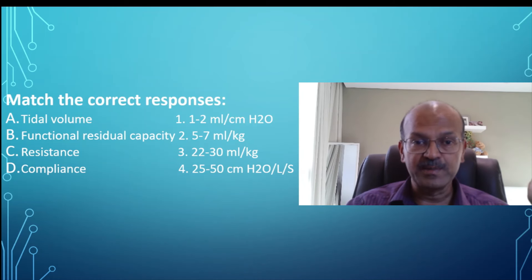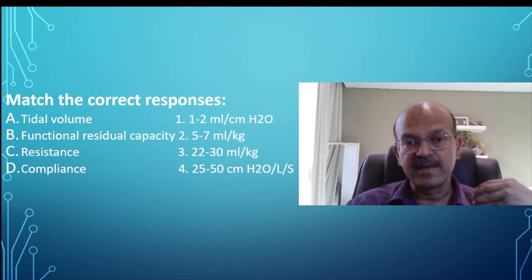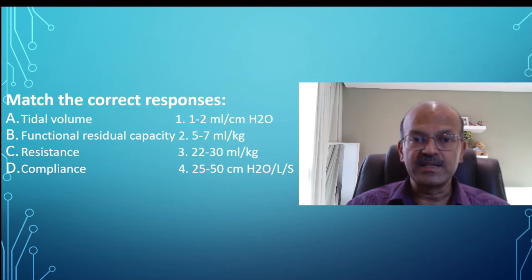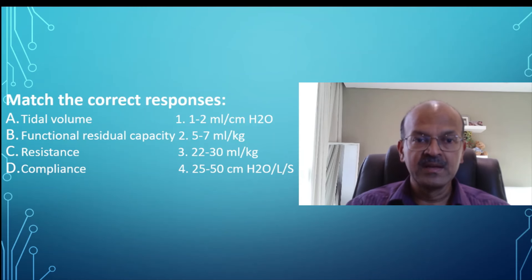Functional residual capacity is the amount of air that is left in the lung at the end of a normal tidal respiration, and typically this is 22 to 30 ml per kilogram. Both tidal volume and FRC are lung volumes, and so they are reflected as ml per kilogram.